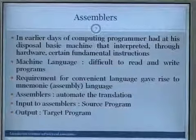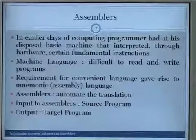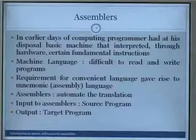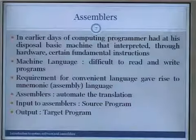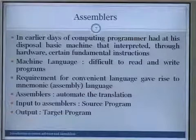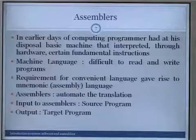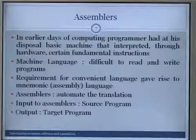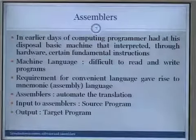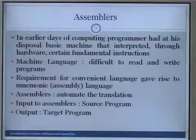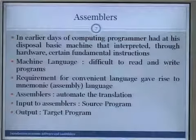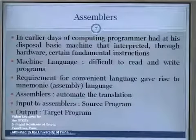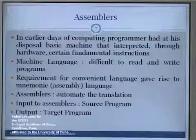In the first generation, most of the system programmers wrote programs in machine level language, and not many people were writing programs at that particular period of time. Programmers wrote in a language that was interpreted by the hardware — those instructions were binary numbers consisting of zeros and ones.